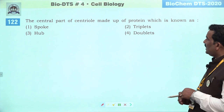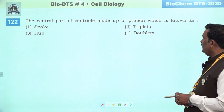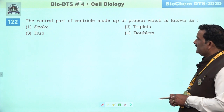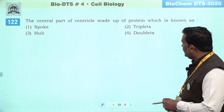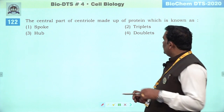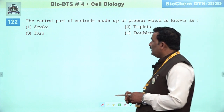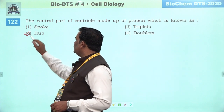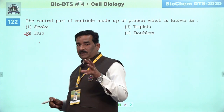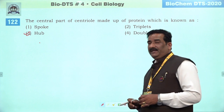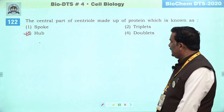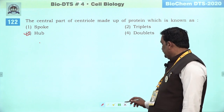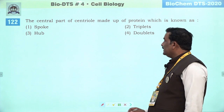Next question: the central part of centriole made up of protein which is known as. Obviously centriole ka jo central part hai woh 'hub' kahlata hai — jo ki central protein molecule hai. Isse 9 radial spokes triplet tubule ko connect karte hain. Third is right answer.